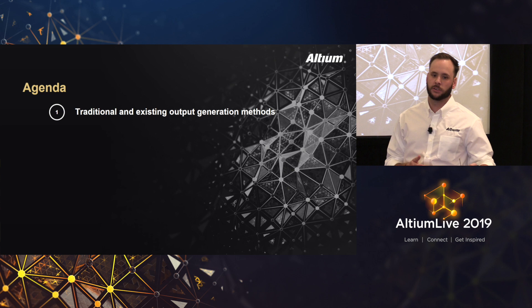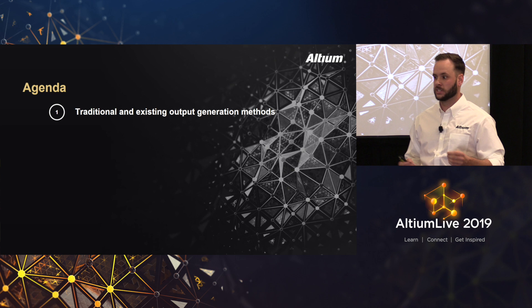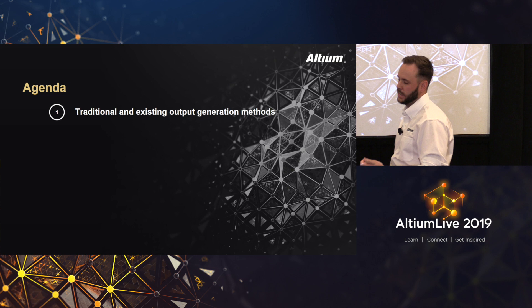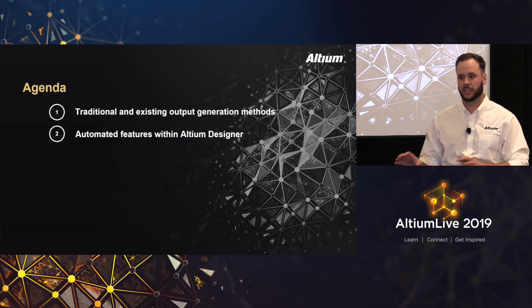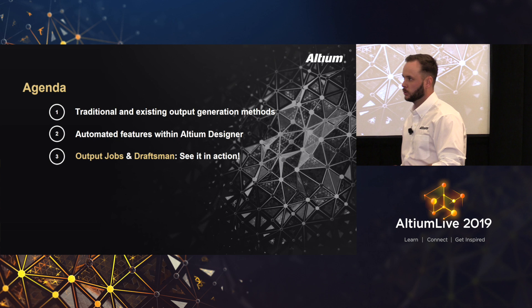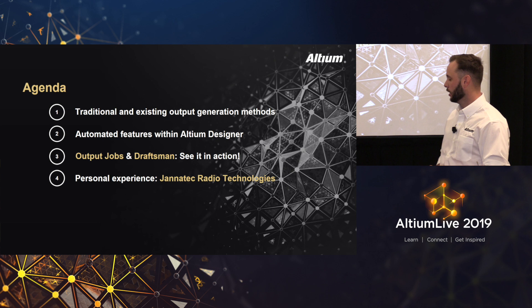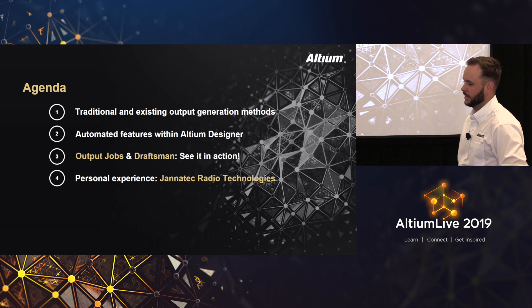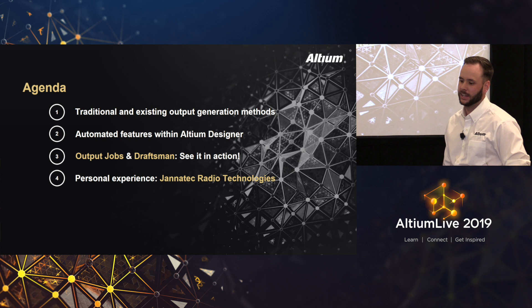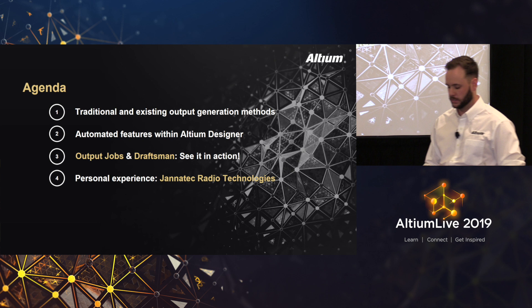The first thing we're going to look at is some traditional and existing methods for generating outputs — aside from the output jobs, how are we generating our Gerbers, our NC drill files, and what are the concerns that come along with that? Some of the manual labor involved, some of the human error that can happen. Then we're going to look at the automated features in Altium Designer — specifically the output jobs and the draftsman document — the real world pros and cons, and then dive right into it. I also want to share a personal experience from a previous place I worked where I could have used these tools but didn't know they existed early in my career.